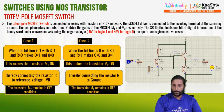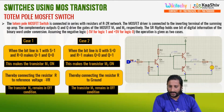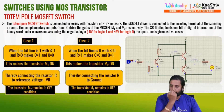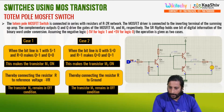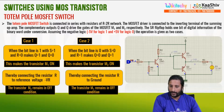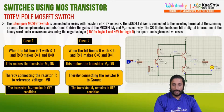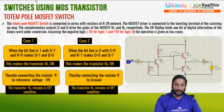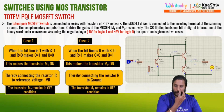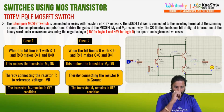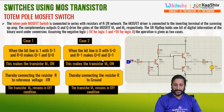This is the totem pole MOSFET switch — the actual circuit. This includes an operational amplifier, resistors, and the metal oxide semiconductor field effect transistor in a totem pole configuration. We have M1 and M2, case 1 and case 2.